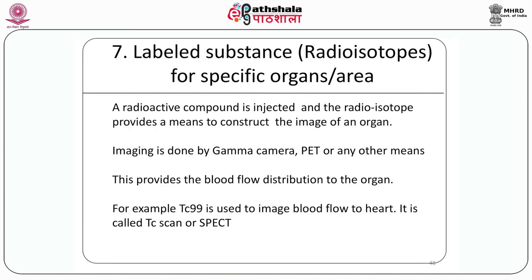A radioactive compound is injected and the radioisotope provides a measure to construct the image of an organ. This image depends on the blood flow status of the organ, and thus indicates the degree of blood flow. Imaging is done by gamma camera, PET, or any other means. For example, technetium-99 is used to image blood flow to the heart. This is also called a TC scan or SPECT.